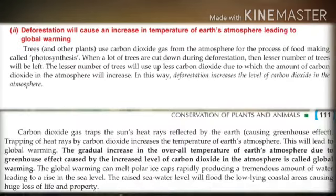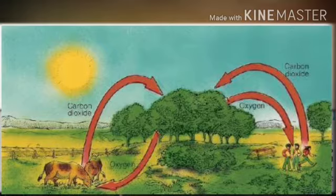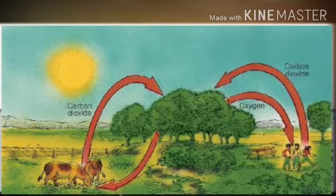Now let us discuss the second consequence: deforestation will cause an increase in the temperature of Earth's atmosphere, leading to global warming. The level of carbon dioxide and oxygen is maintained in the atmosphere due to two main processes — respiration and photosynthesis. Plants give out oxygen during photosynthesis, which is utilized by all living organisms for respiration, and in doing so they give out carbon dioxide, which is utilized by plants for photosynthesis. The percentage of carbon dioxide in the air is 0.03 percent.